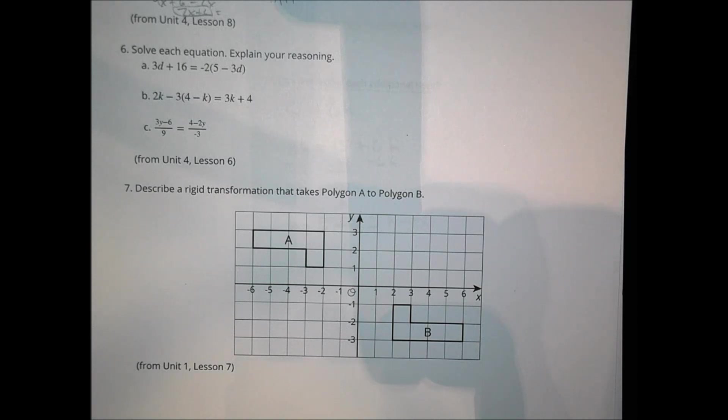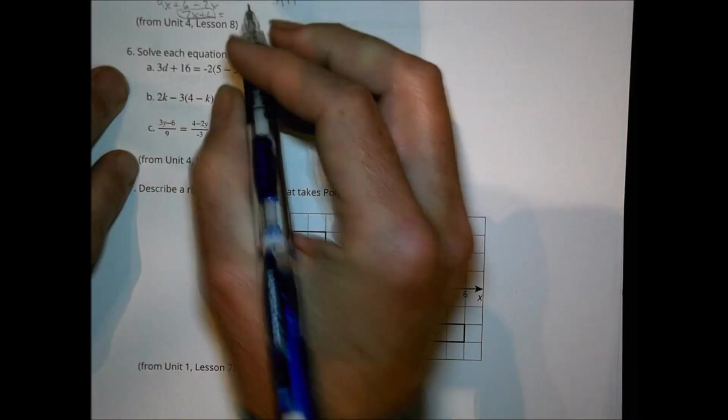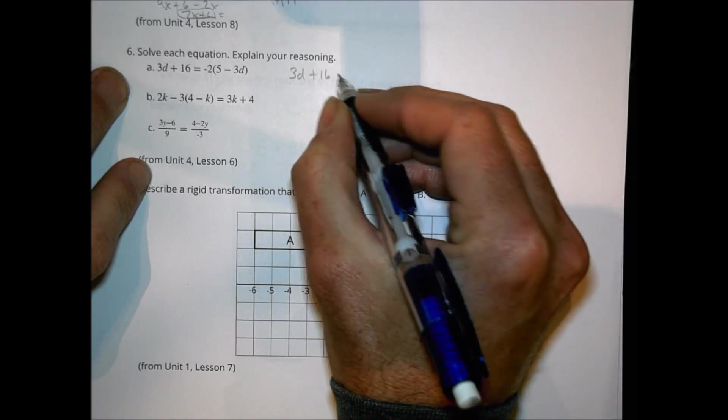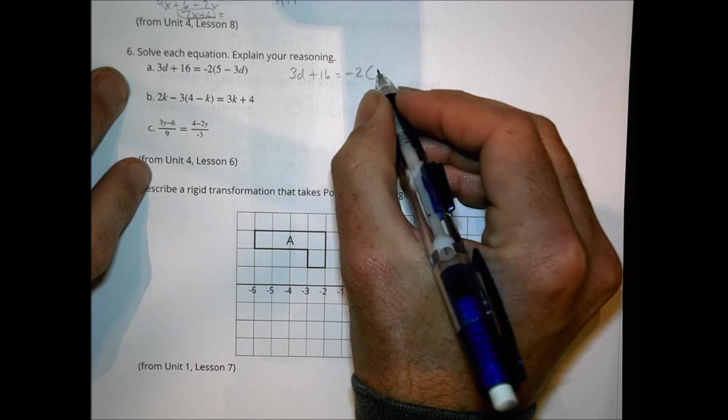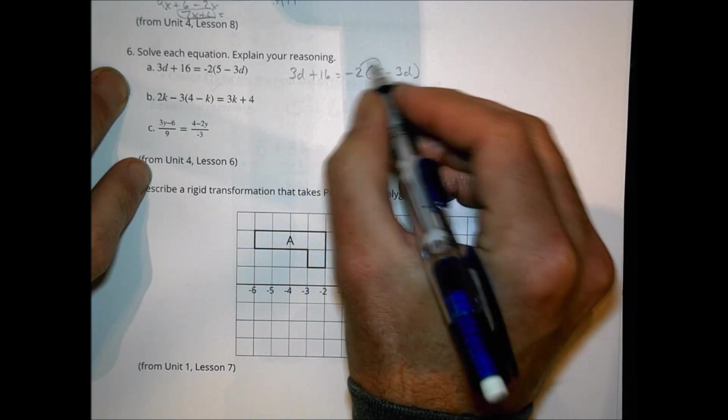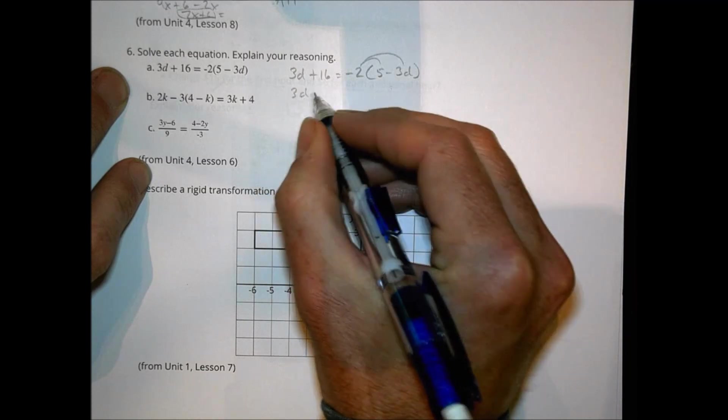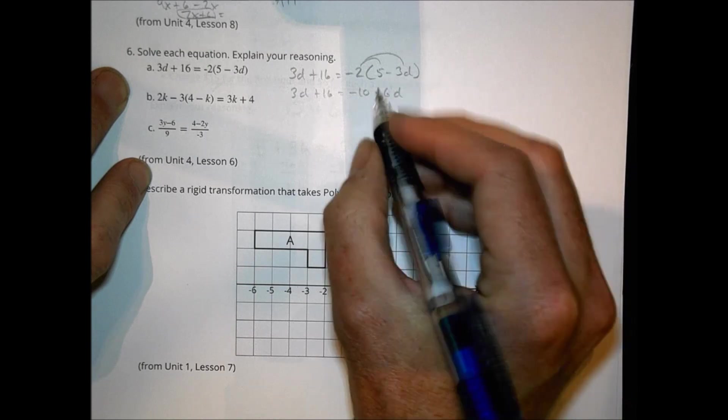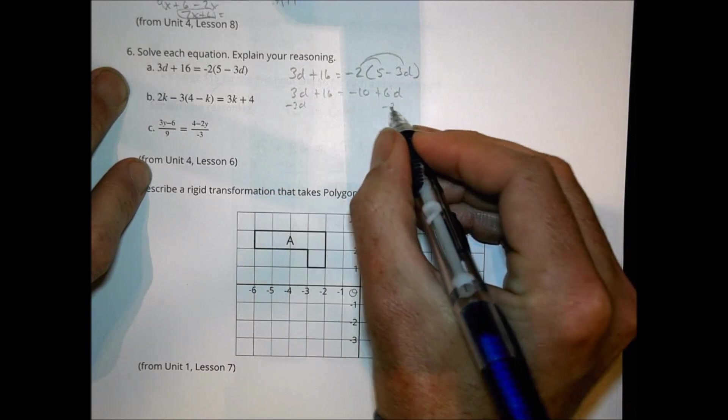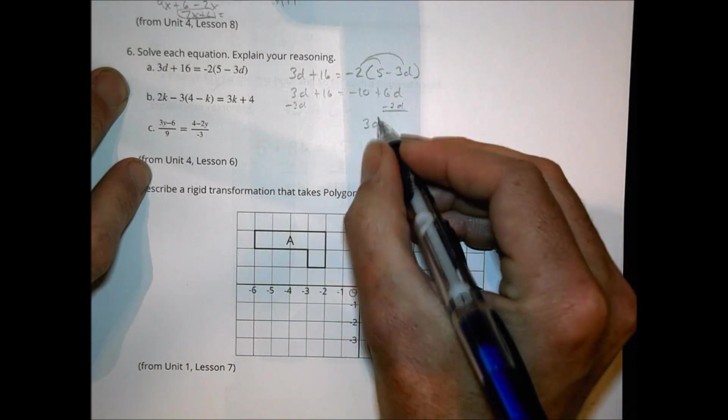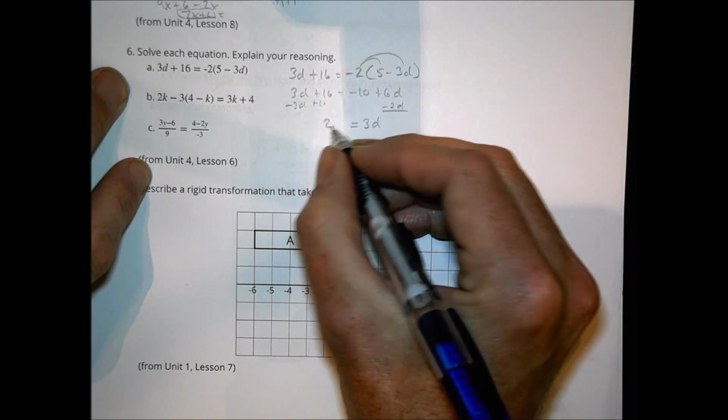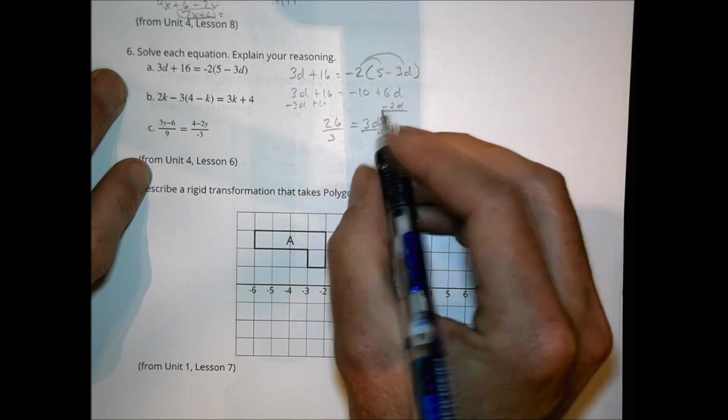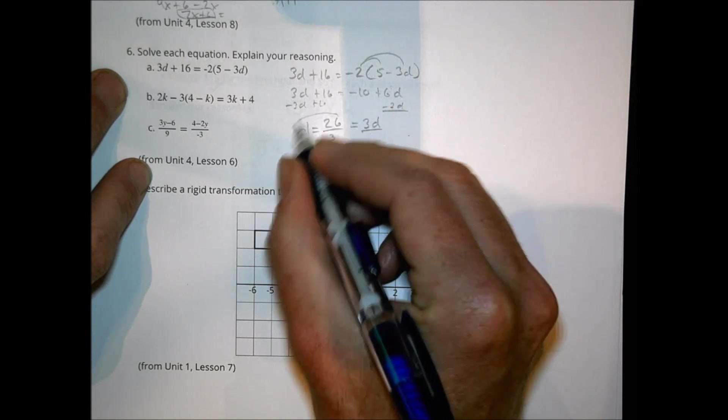Number 6, solve each equation. First of all we have 3d plus 16 equals negative 2 times 5 minus 3d. Let's distribute. So we write 3d plus 16 equals negative 10 plus 6d. I'm going to subtract 3d, so I have 3d left on this side. I'm going to add 10. So I have 26 on this side. And we're going to divide by 3. And my answer simply is d equals 26 over 3.